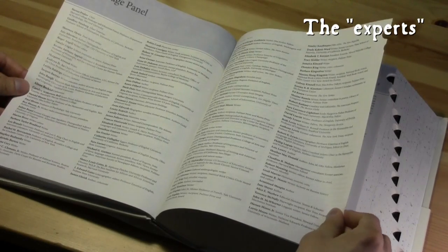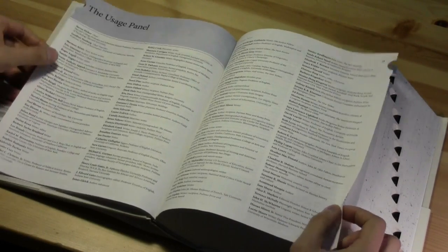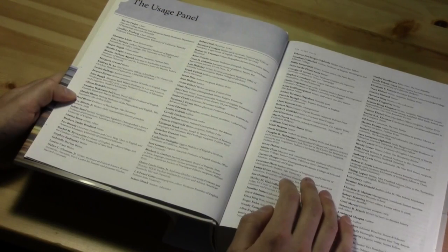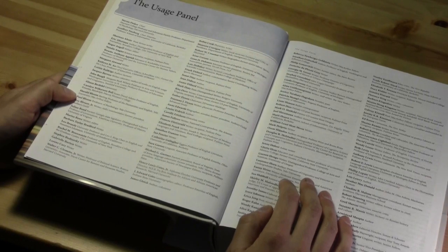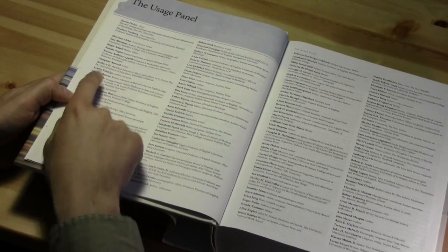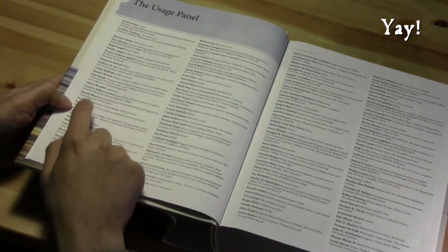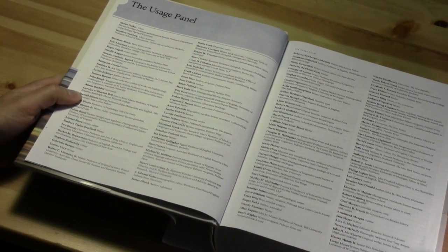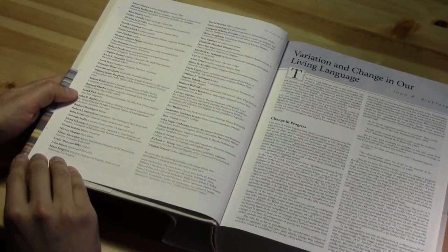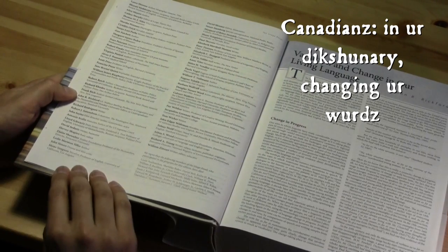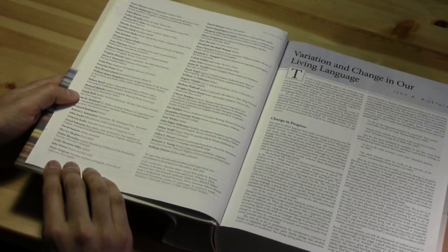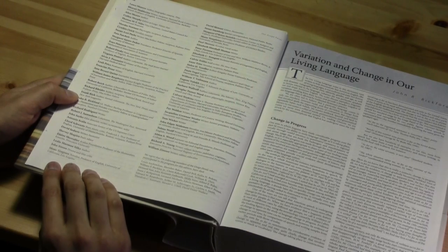And then here's the usage panel. So chaired by cognitive scientist Steven Pinker. So let's look at some of the interesting names on the usage panel here, just sort of scrolling through. Well, a Canadian, Margaret Atwood, Canadian writer. We have Alison Bechdel. Here's John McWhorter, linguist. Alice Munro, another Canadian fiction writer. There's Antonin Scalia, justice of the US Supreme Court. So there's the conservative end of language use, I guess.